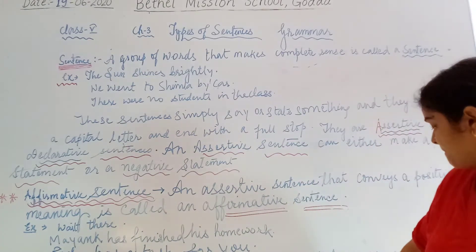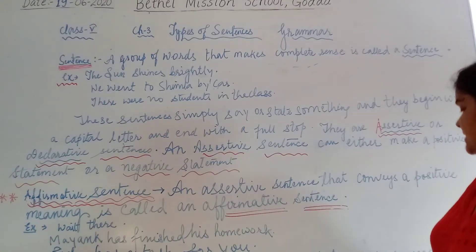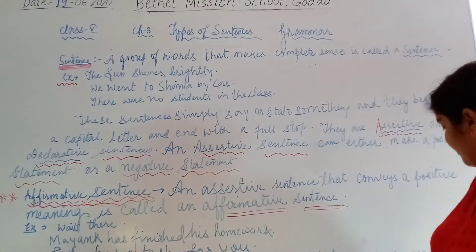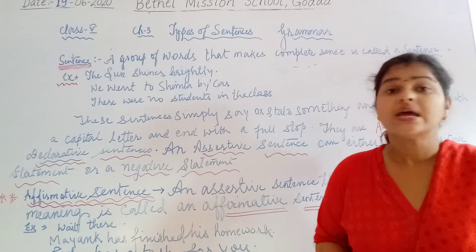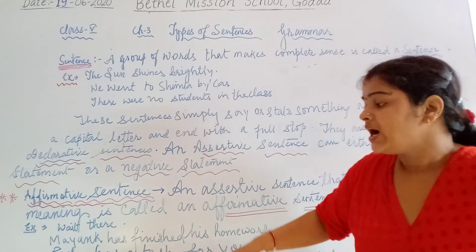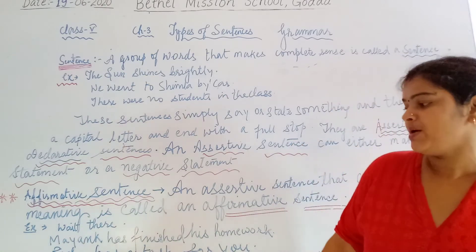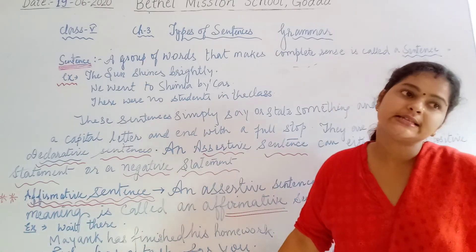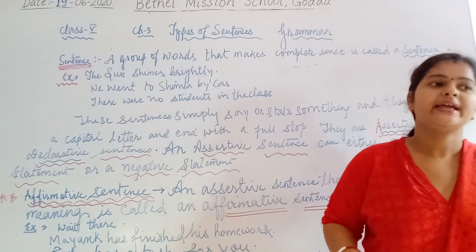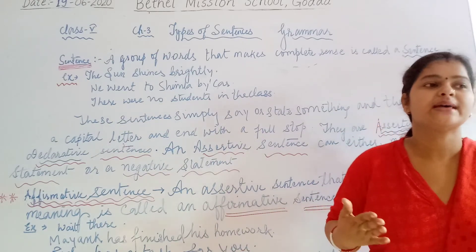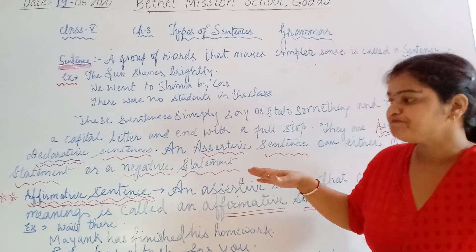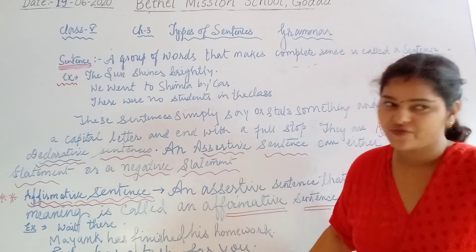Another example: 'Mayank has not finished his homework' — that means Mayank has not completed the homework, in contrast to the affirmative 'Mayank has finished his homework.' This gives us a clear discussion about the negative sense of a sentence. After this, I would like to explain some more sentences which are given in the book. We will see them in the latter half.